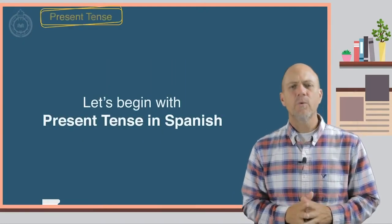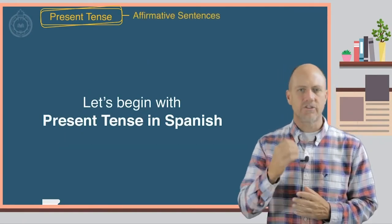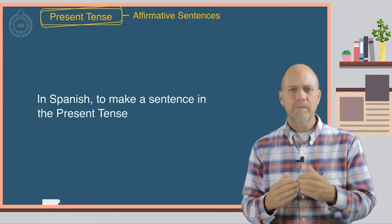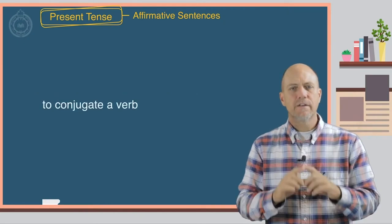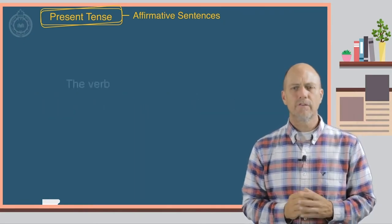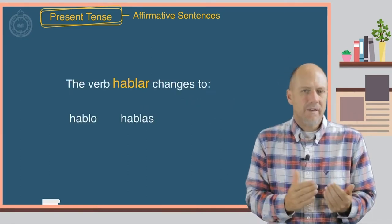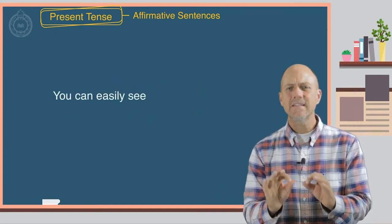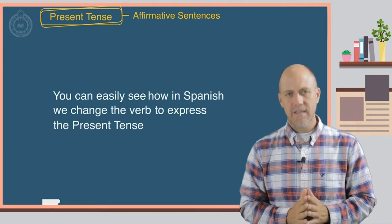Let's begin with what you already know, the present tense in Spanish. In Spanish, to make a sentence in the present tense, you have to conjugate the verb. To conjugate a verb means to change it. Here's an example. The verb hablar changes to hablo, hablas, habla, hablamos, hablan. You can easily see how in Spanish we change the verb to express the present tense.